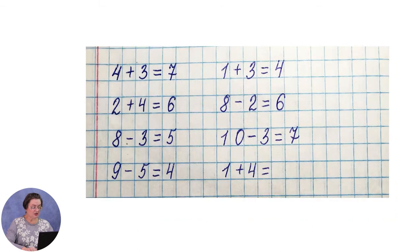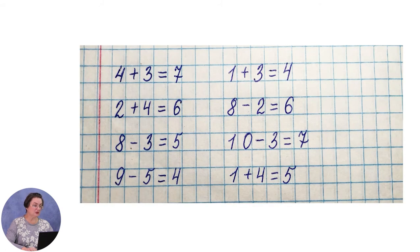Ниже пишем последний пример этого столбика: 1 плюс 4. В этом примере какое арифметическое действие? Правильно — сложение. Вспоминаем: 1 и 4 — это состав какого числа? Верно, 5. Значит, 1 плюс 4 равно 5.